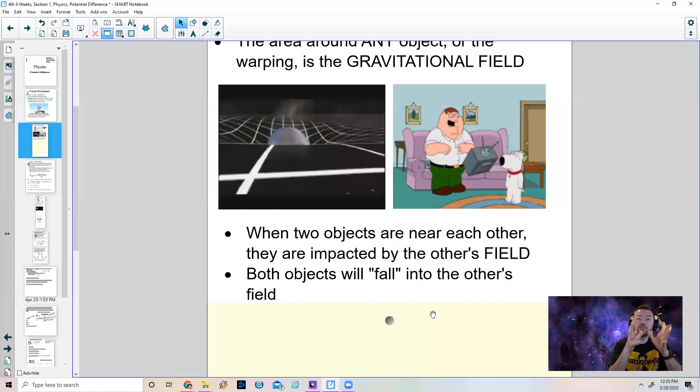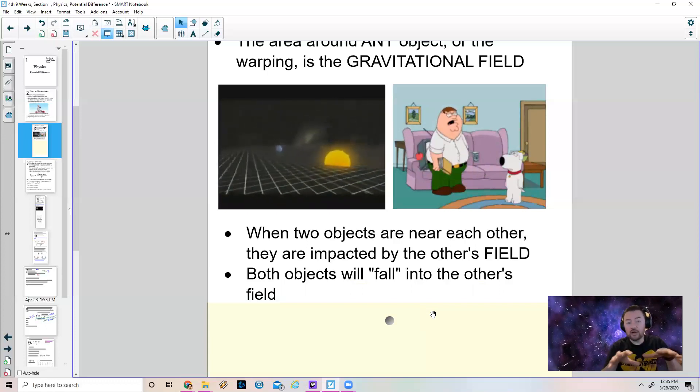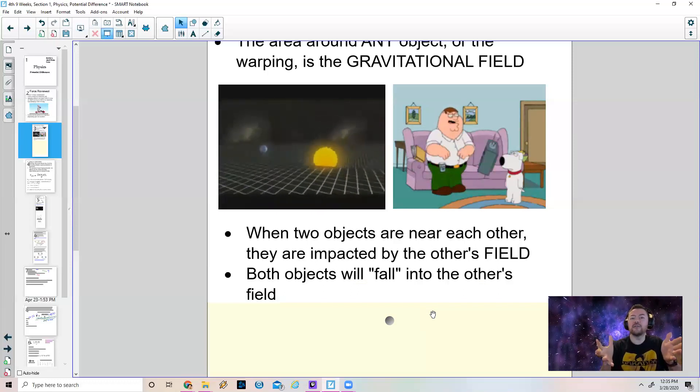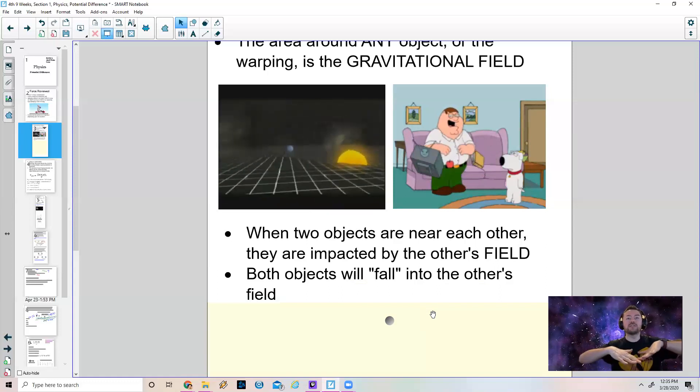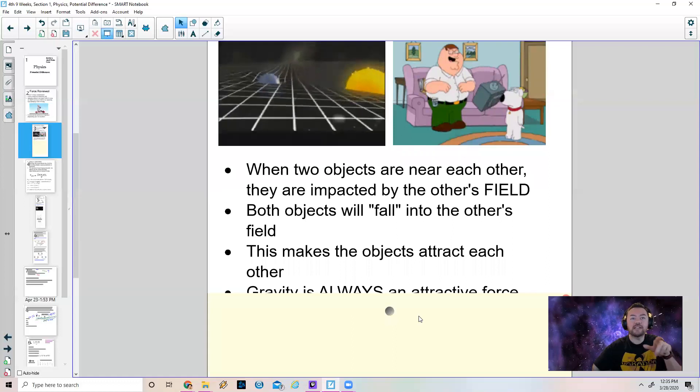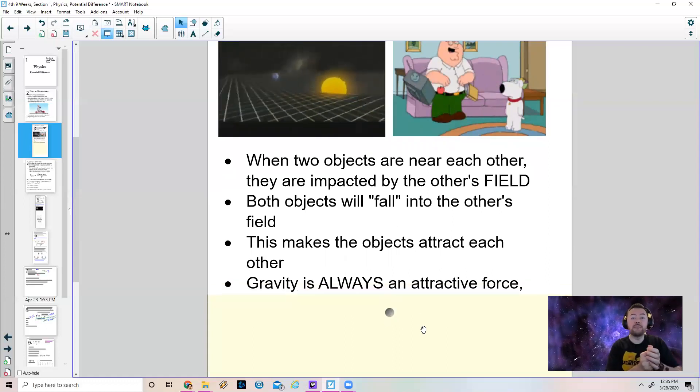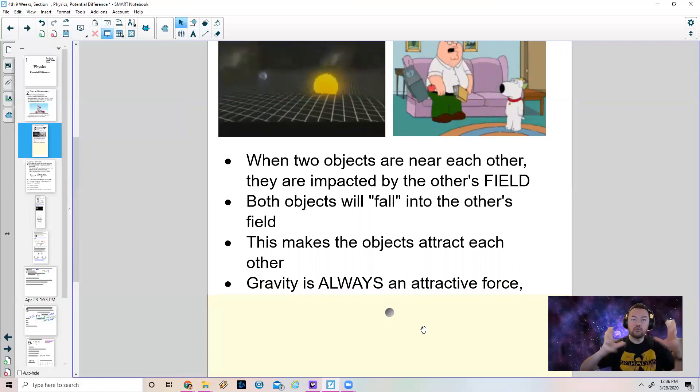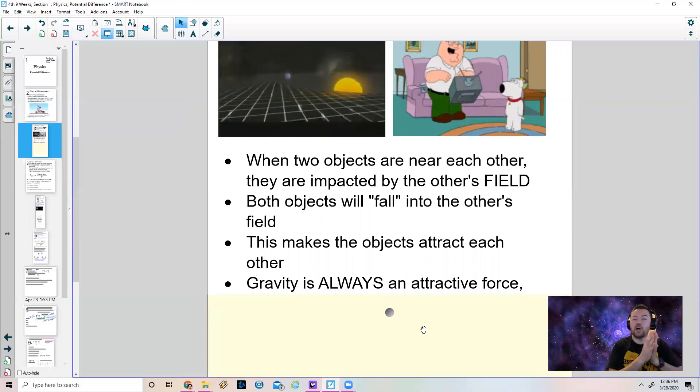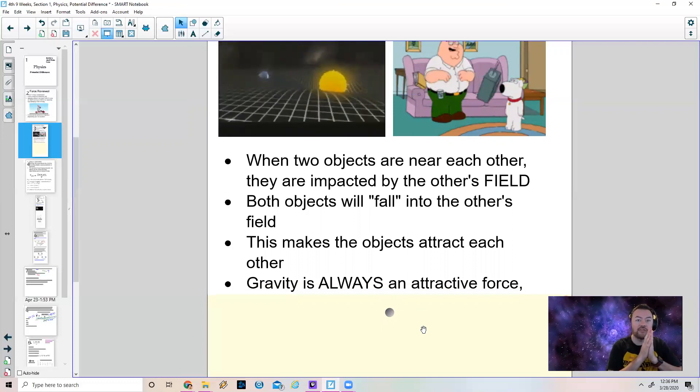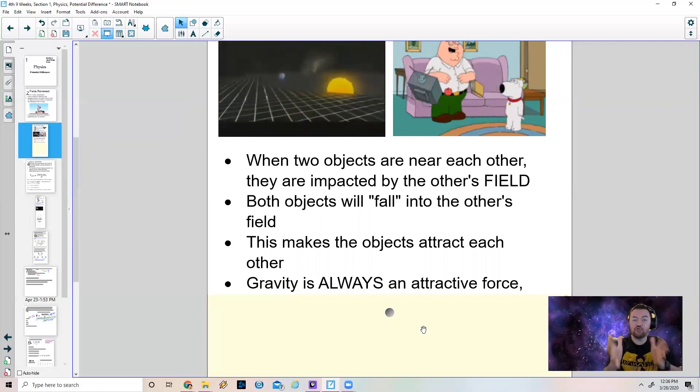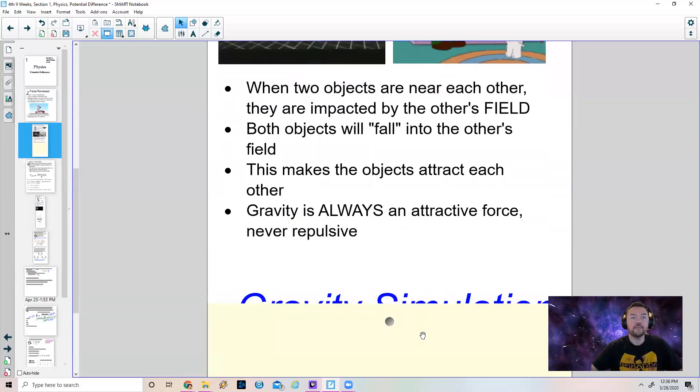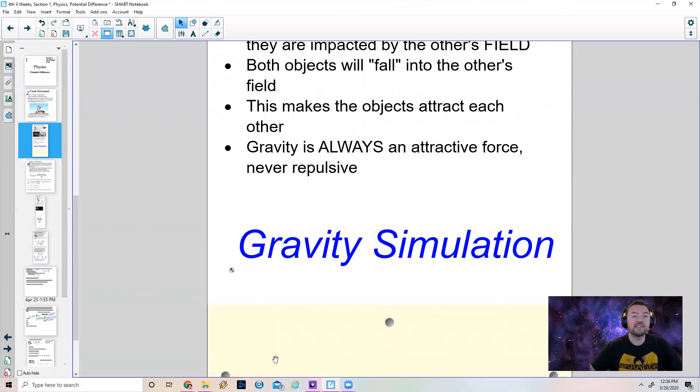And that is what makes gravitational an attractive force, because you see these objects wanting to go towards each other through what we call attraction. So gravity is always an attractive force. It's never repulsive. There is no anti-gravity, it's always just gravity is an attractive force because everything wants to fall towards each other. So I'm going to show you my gravity simulation now.